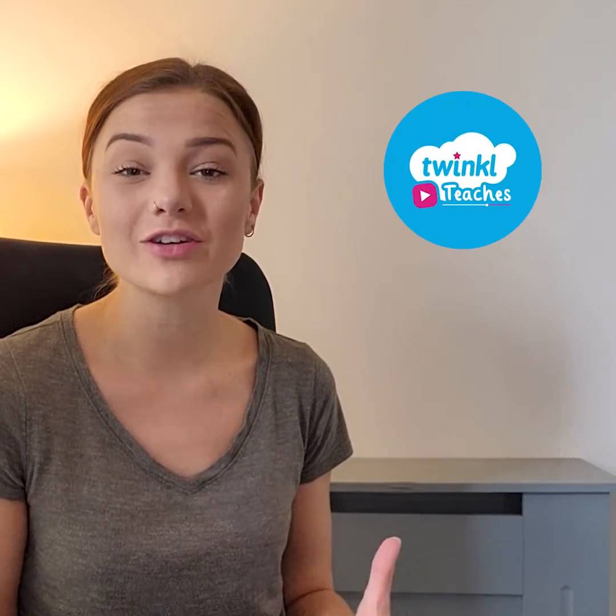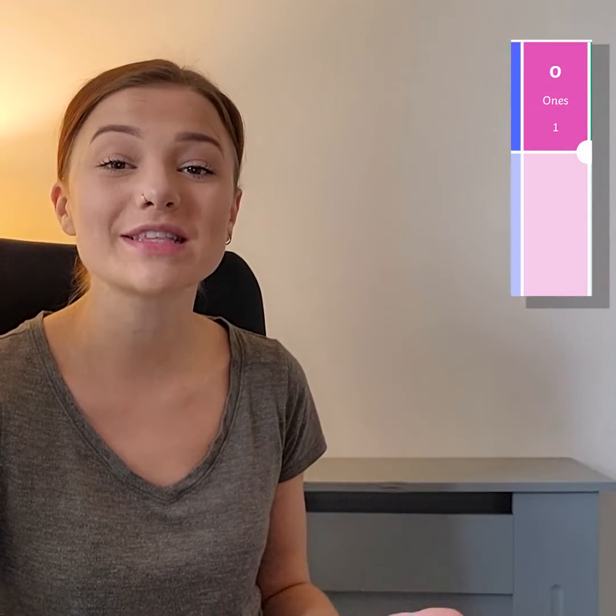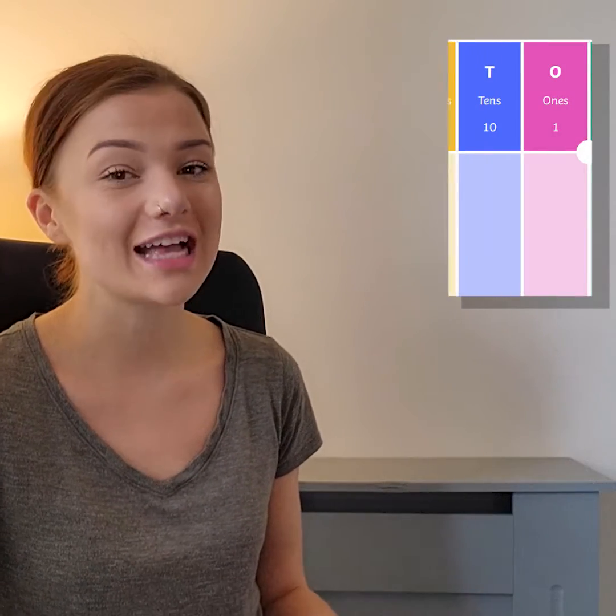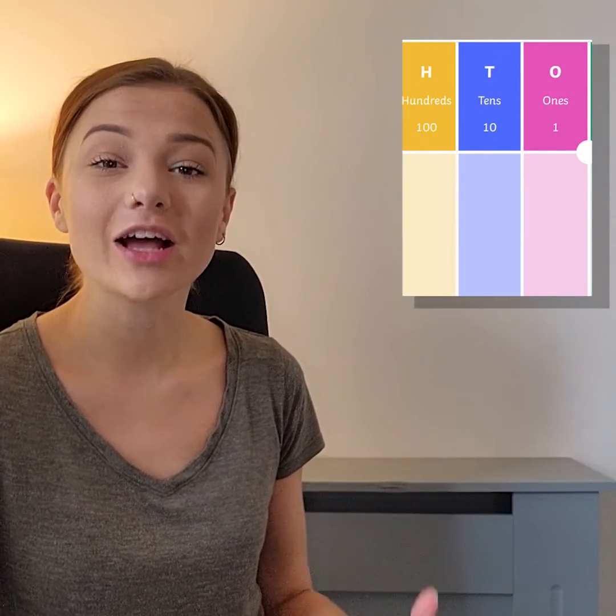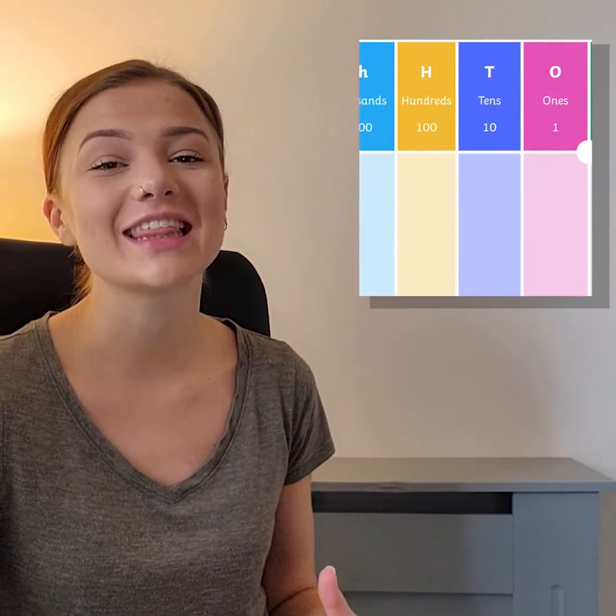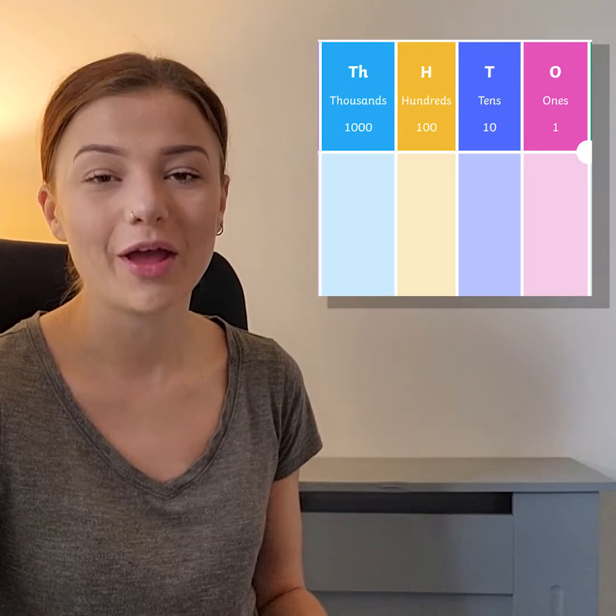When we're comparing and ordering numbers up to 100,000, we need to use a place value chart. Here is a place value chart. As you can see, it has a ones column, a tens column, a hundreds column, and a thousands column.